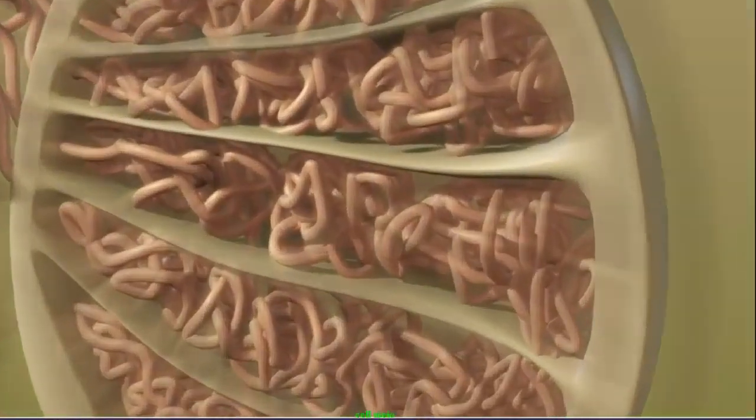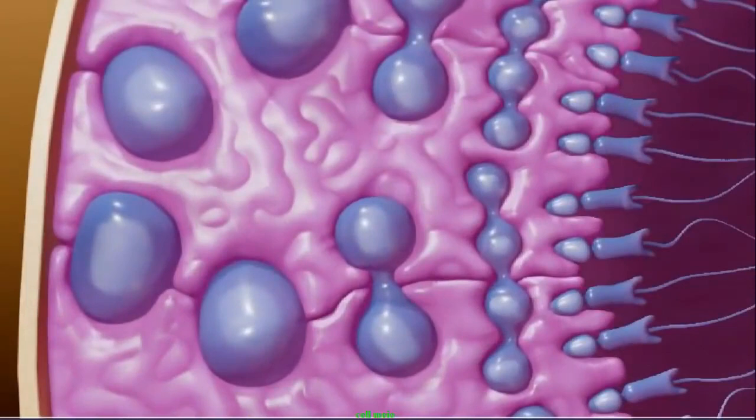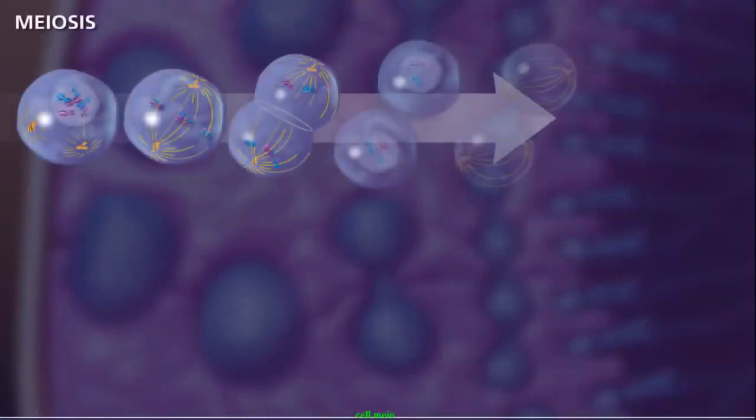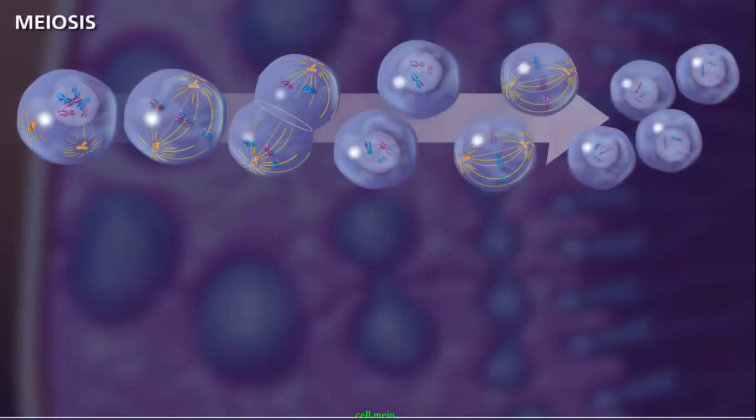Meiosis occurs in special cells called germ cells within the gonads of males and females. For the successful reduction in the number of chromosomes to occur in the new haploid daughter cells, two rounds of divisions are necessary.